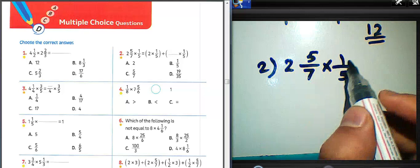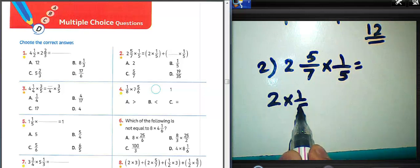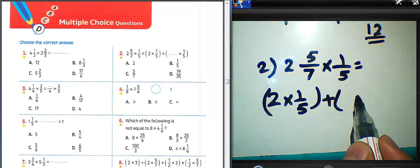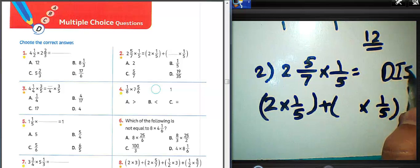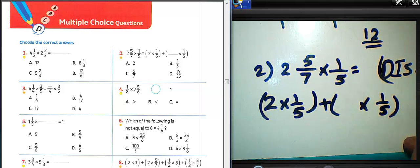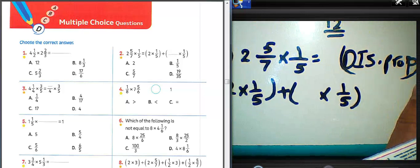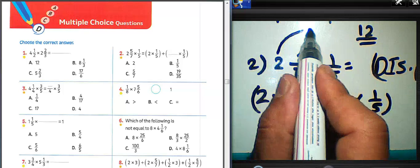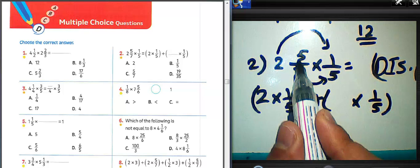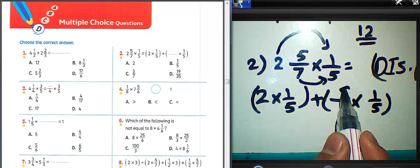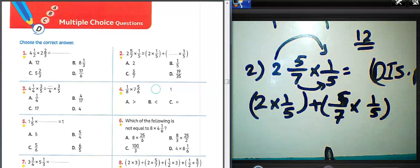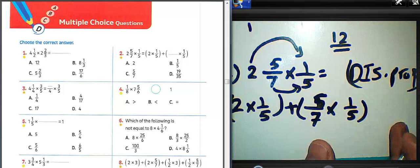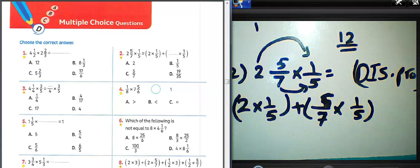Question number two: two and five over seven, multiply by one over five. This equals two times one over five, plus five over seven times one over five. Can you tell me about this property? We call it the distributive property. So we used here multiplication: two times one over five, and then five over seven times one over five, using the distributive property.